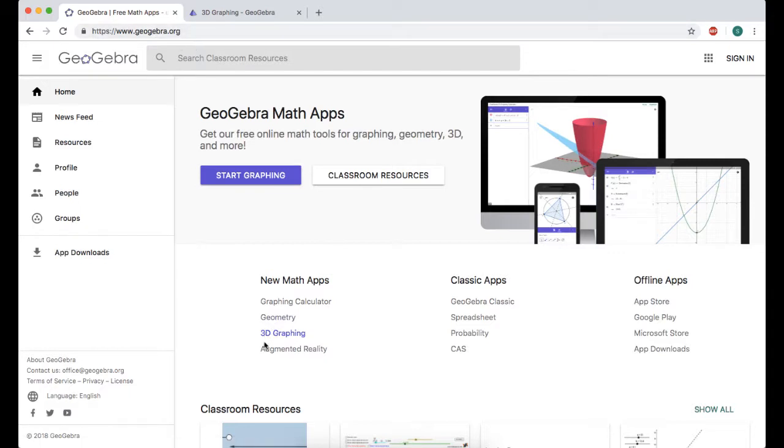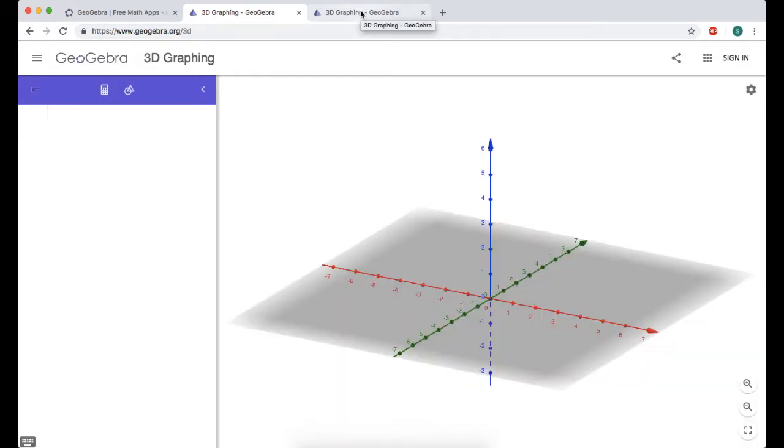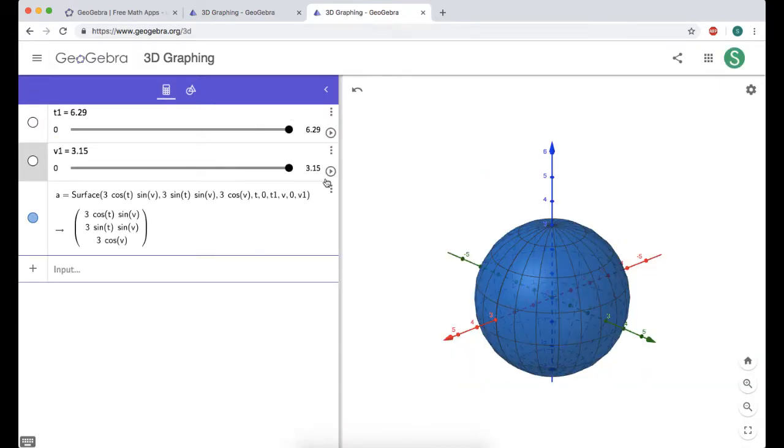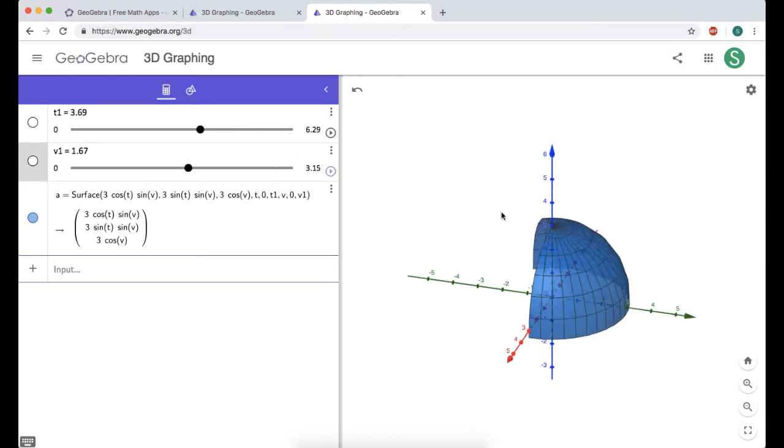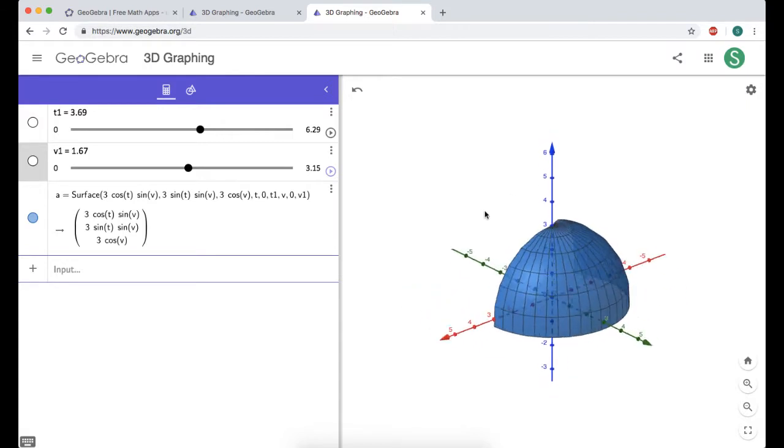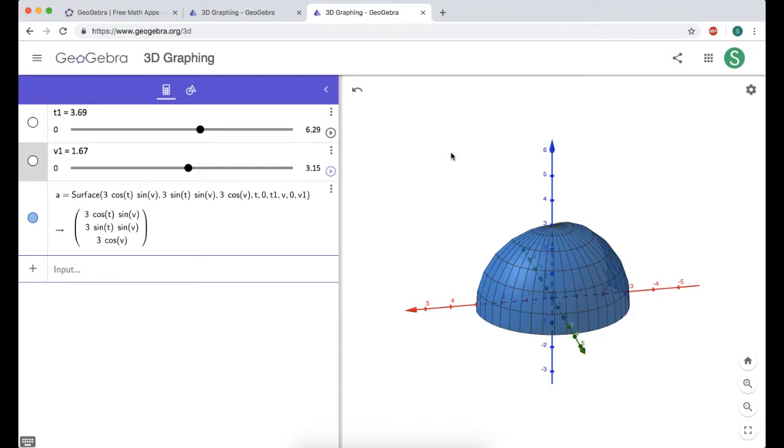I'm at geogebra.org. I'm going to click on 3D graphing to get an entirely new page. If you watched the previous video, this is where I did all the work for the sphere. I had two sliders set up so that I could change angles around and get a better sense of what's going on. You can draw some really nice graphics this way if you mess around with enough things.